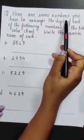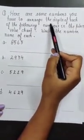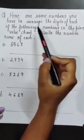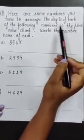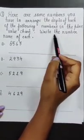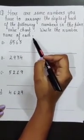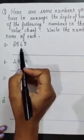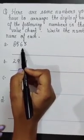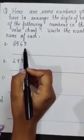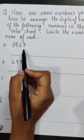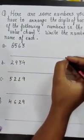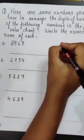Here are some numbers. You have to arrange the digits of each of the following numbers in the place value chart. Write the name of each. Now the first number is 8563. Starting from the right, we make the entries in the place value chart as shown here.